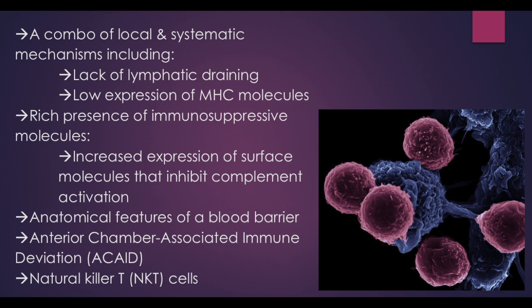There's also the anatomical features of a blood barrier, and the anterior chamber-associated immune deviation, shortened as ACAID, which is essentially an immune response to antigens injected into the anterior chamber. Natural killer T cells can also play a role in the regulation of immune responses and are necessary for the development of ACAID.